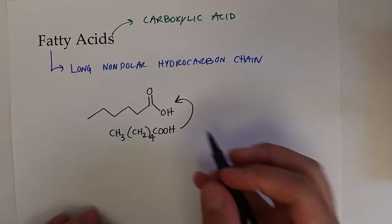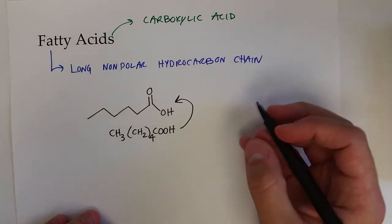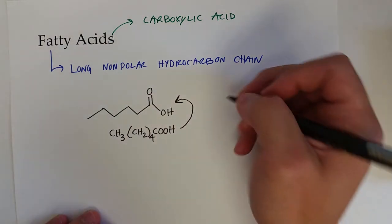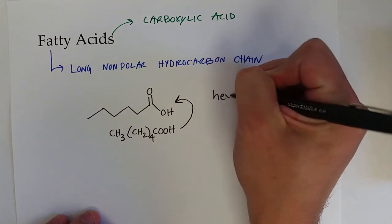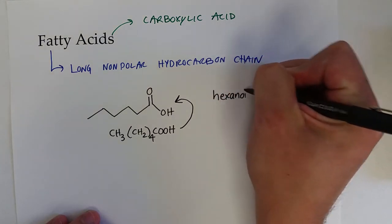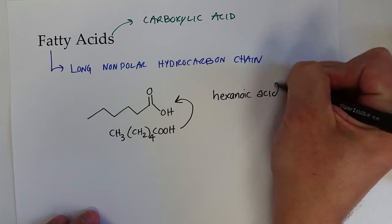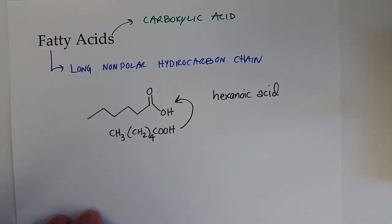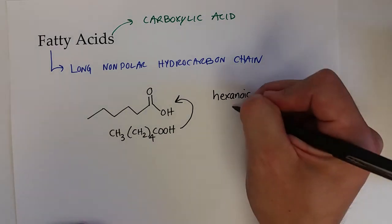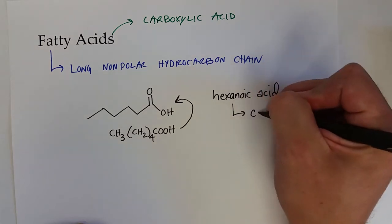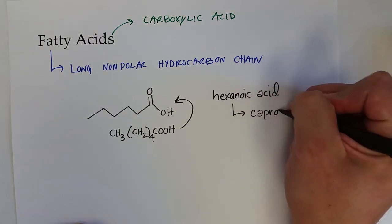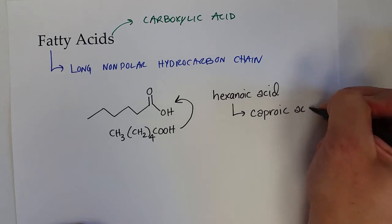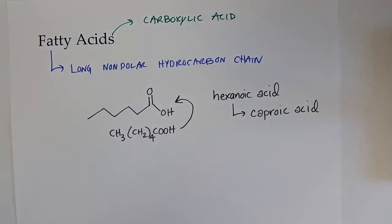And of course, you already know we could actually name these very easily based on that. Since it's 6 carbons, this would be hexanoic acid. Most of these have common names. I'm not going to lie, I had to look up this one. This is caproic acid.